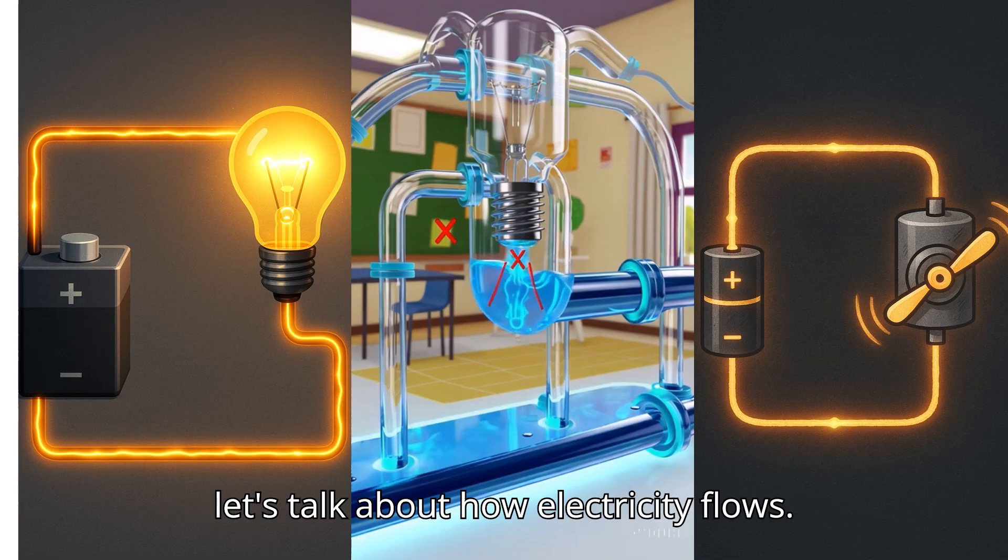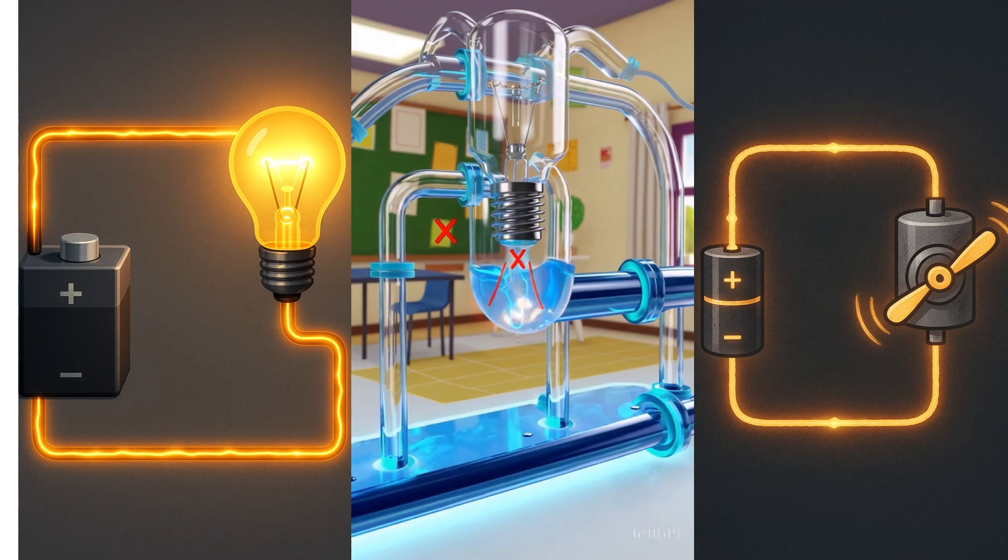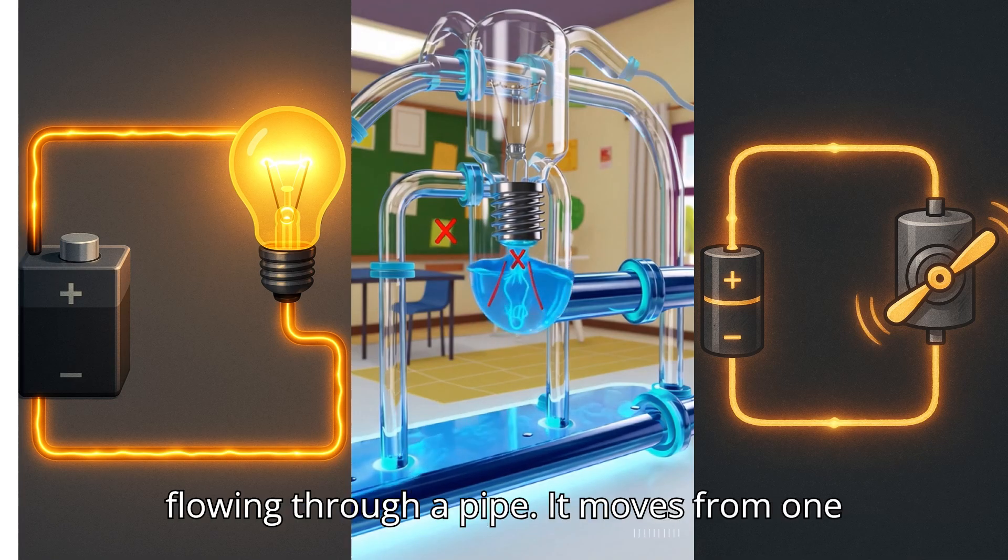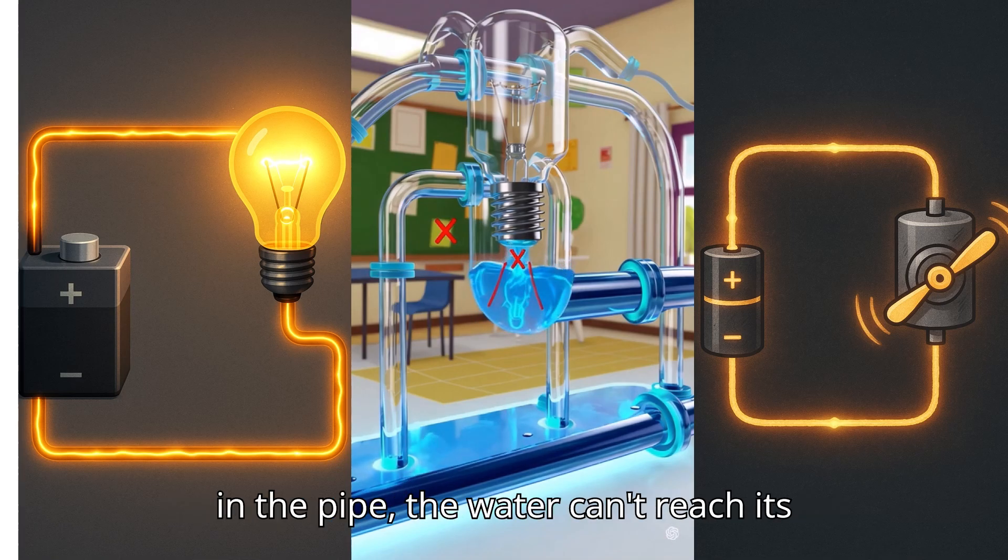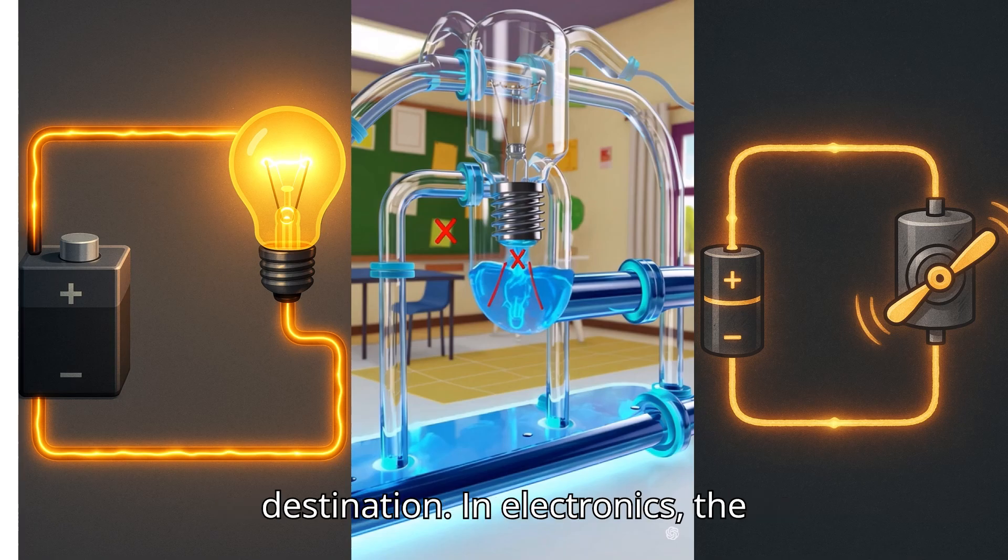Now let's talk about how electricity flows. You can think of electricity like water flowing through a pipe. It moves from one place to another, and if there's a break in the pipe, the water can't reach its destination. In electronics, the electricity flows through wires and circuits.